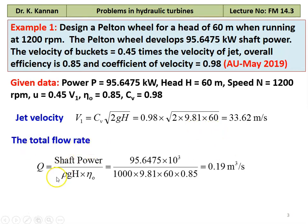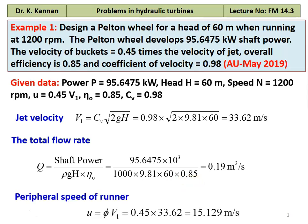The total flow rate is calculated from the overall efficiency: Q = shaft power / (ρGH × overall efficiency) = 95.6475 × 10³ / (1000 × 9.81 × 60 × 0.85) = 0.19 m³/s. The peripheral speed of the runner: U = 0.45 × V1 = 0.45 × 33.60 = 15.129 m/s.